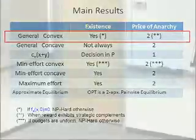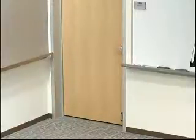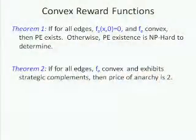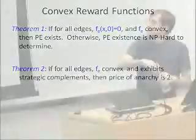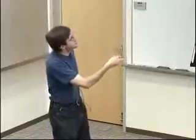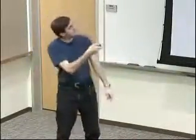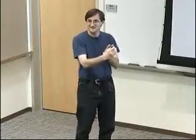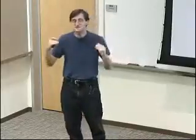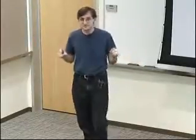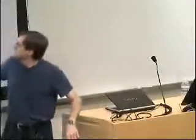In the remaining time I'll give an idea of why some of these things are true. There are two theorems for the convex case. First: if reward functions are convex and both people must contribute at least a little to get positive reward on every edge — meaning f_E(x, 0) = f_E(0, y) = 0 — then pairwise equilibrium exists. Otherwise it may not, and it's hard to determine.